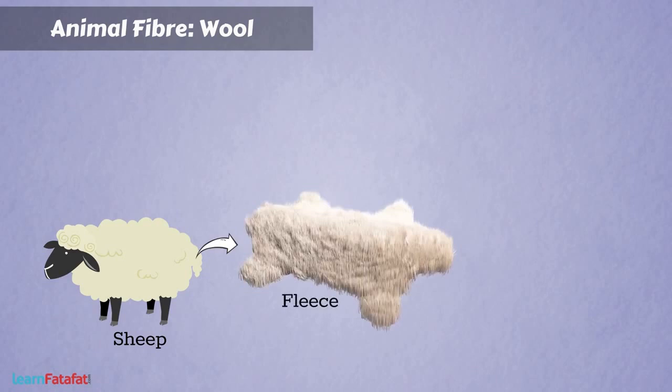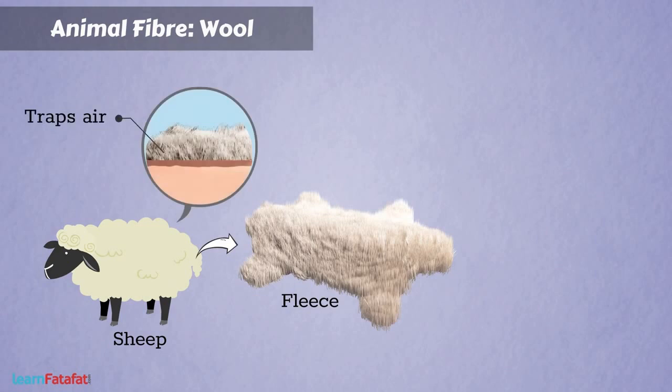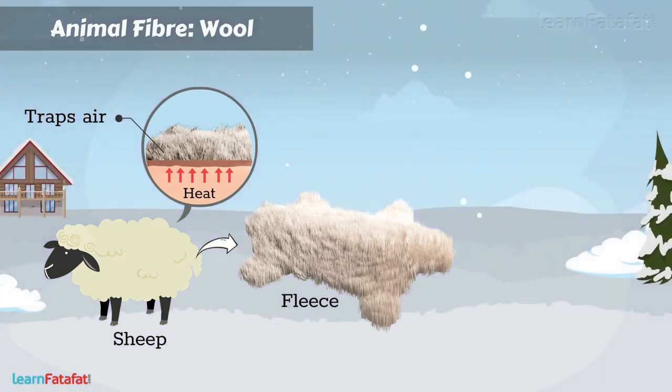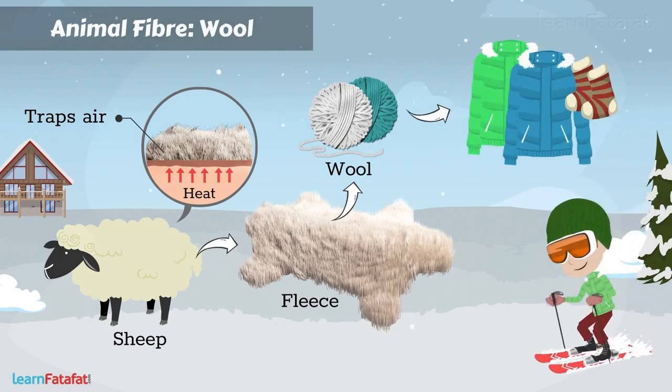Some animals such as sheep have a thick coat of hairy fibers on their body, called fleece. Fleece traps air — and since air is a bad conductor of heat, heat does not pass from the animal's body into the surrounding environment. This helps to keep their body warm. We obtain wool from the fleece of sheep, and clothes made of wool keep us warm.